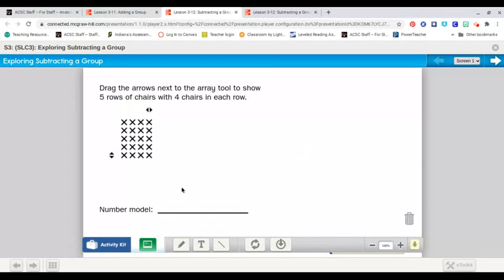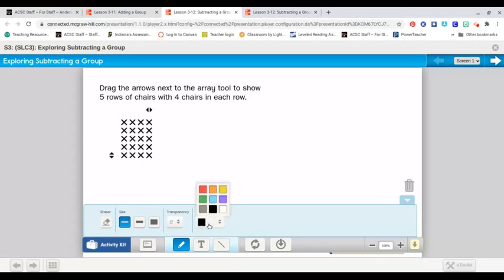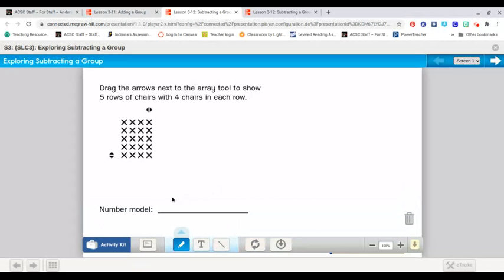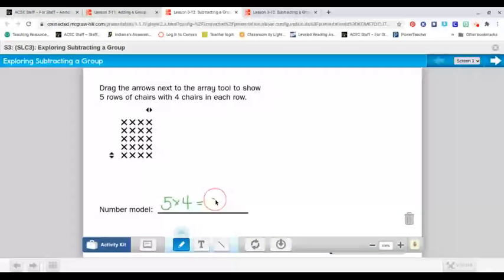Let's remember what that number model was again. Five. Oops, I've got to get my pencil working, don't I? Let's write in green this time. So, I have to have five times four equals, who remembers? Twenty. Five, ten, fifteen, twenty. Okay.